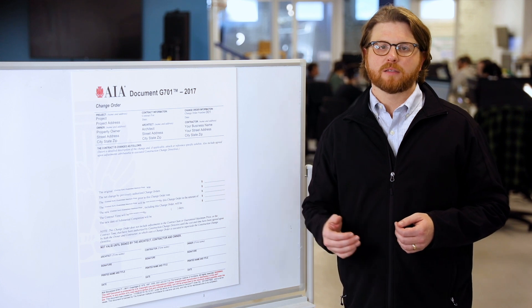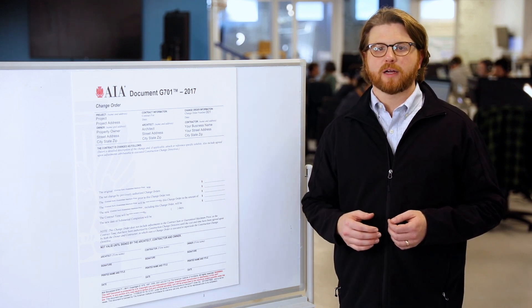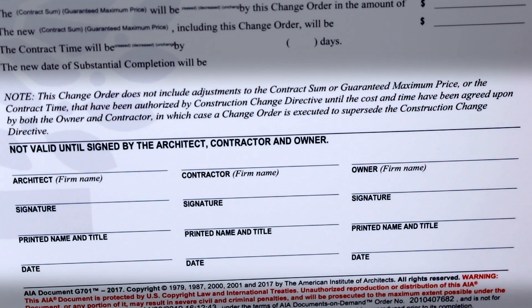Finally, get it signed. The change order is essentially an amendment to the original contract, so it should be signed by all relevant parties — the contractor agreeing to the changes and the owner and architect ordering the changes. For record-keeping purposes, the change order should be printed out and signed three times so that each party has an original executed copy to clarify any issues that could come up later on the project.